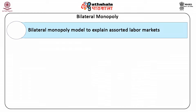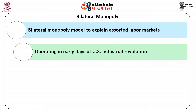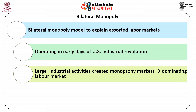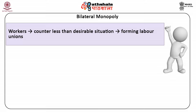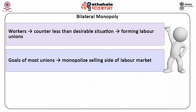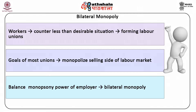The bilateral monopoly model was developed to explain assorted labour markets operating in the early days of the US Industrial Revolution, the late 1800s and early 1900s. During this period, large industrial activities — that is factories, mines, and lumber operations — commonly created monopsony markets by dominating the labour market of a given community, so-called a company town. The expected monopsony outcome, especially low wages, inevitably resulted. Workers sought to counter these less-than-desirable situations by forming labour unions, whose expressed goal was to monopolize the selling side of the labour market and balance the monopsony power of the employer. This resulted in a bilateral monopoly.